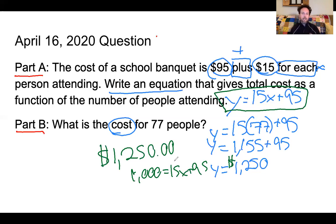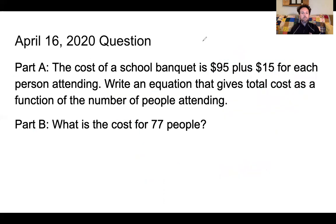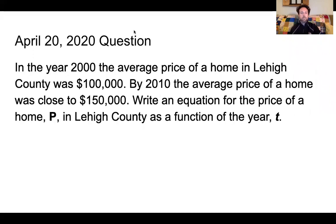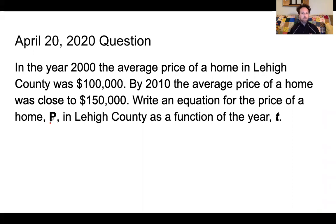Great job — I look forward to seeing how well you did on this. Now I'm going to clear my drawings and go on to today's question. This one involves real life — I actually researched and found these numbers about Lehigh County where I live. In the year 2000, the average price of a home in Lehigh County was $100,000. By 2010, the average price of a home was close to $150,000. Write an equation for the price of a home P in Lehigh County as a function of the year T.